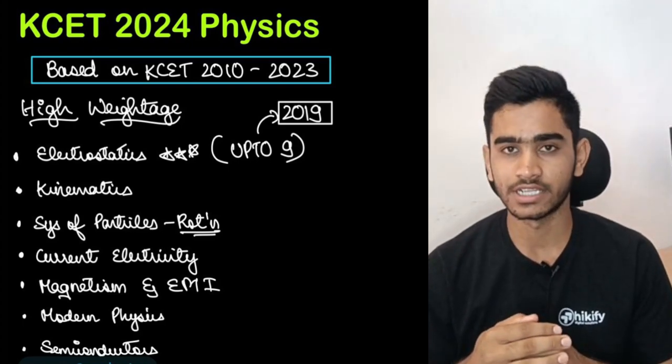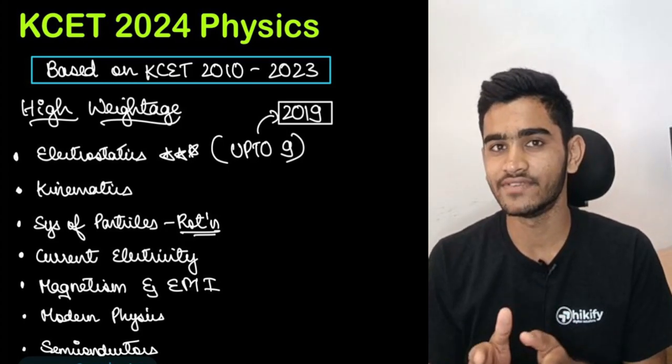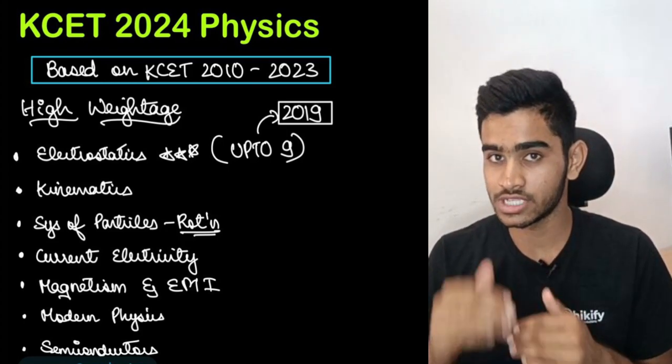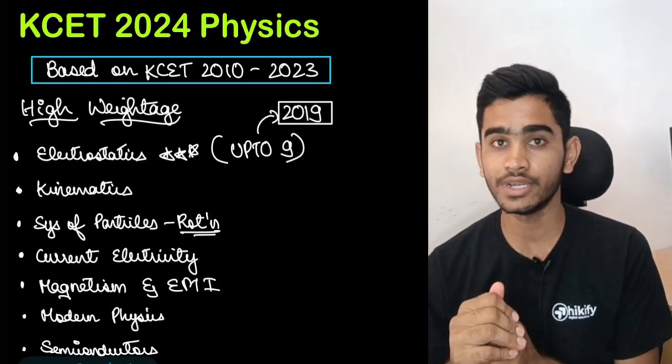Magnetism and electromagnetic induction. This comes as a complimentary gift again if you understand current electricity well. So everything is linked. So your sequence also should be really systematic when you go about studying these units.